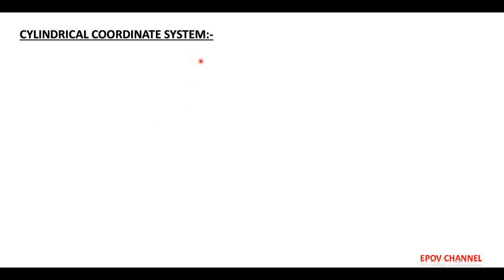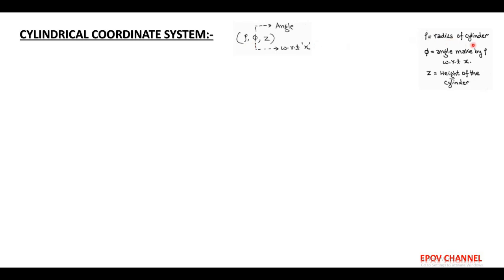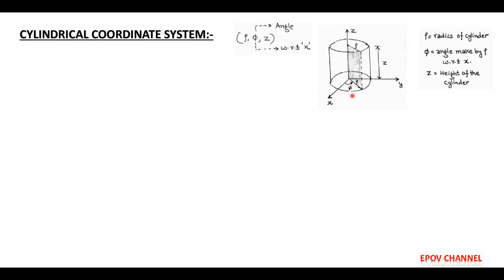Next, the orthogonal system is the cylindrical coordinate system. Its coordinates are rho, phi, and z. Here rho is called the radius of the cylinder. For this, we consider a circular cylinder placed in the Cartesian coordinate system — that is, the x, y, z axes — and the base of this cylinder is placed on the x-y plane, that is z equals 0.